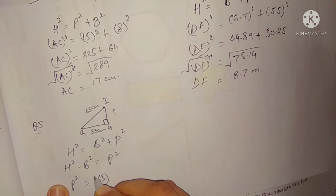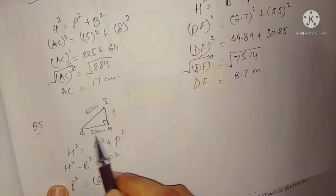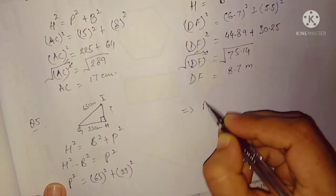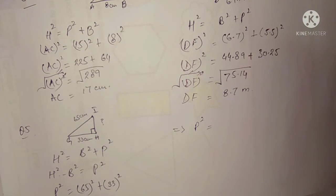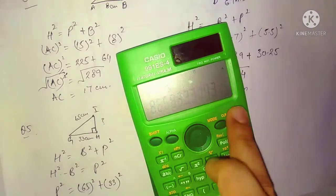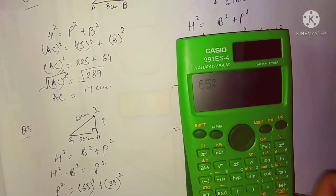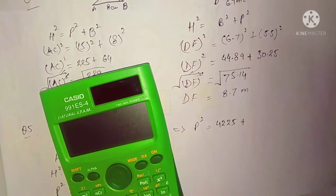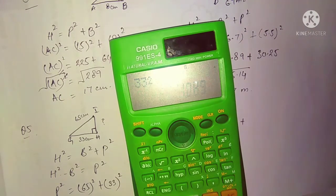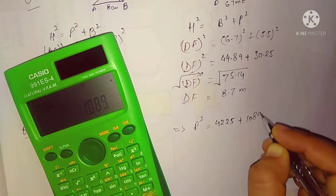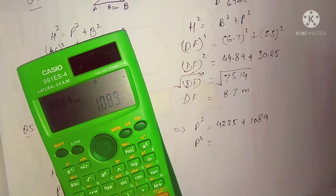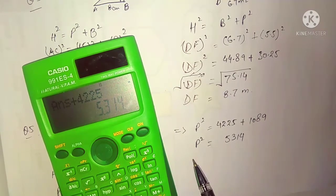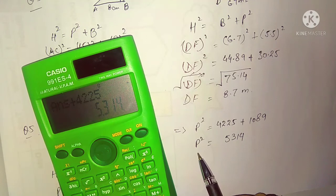Hypotenuse is 65 and base is 33. So perpendicular squared equals 65 squared minus 33 squared. 65 squared equals 4225 and 33 squared equals 1089. Adding these: wait — subtracting: 4225 minus 1089 equals 3136.